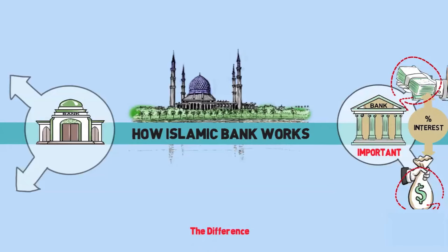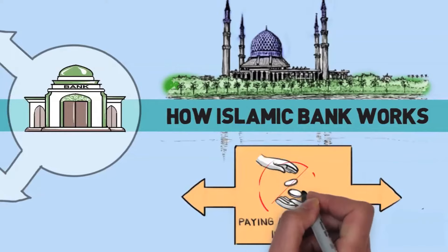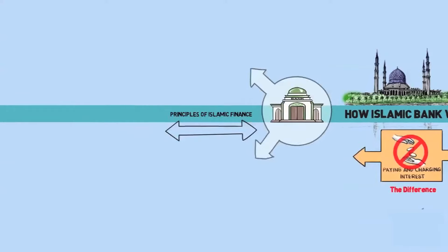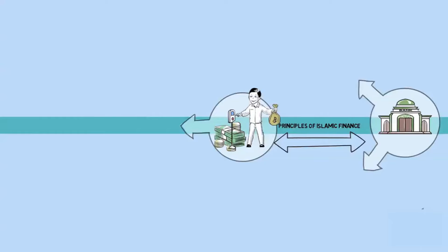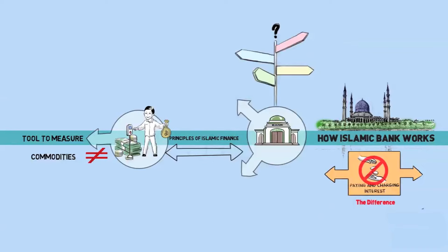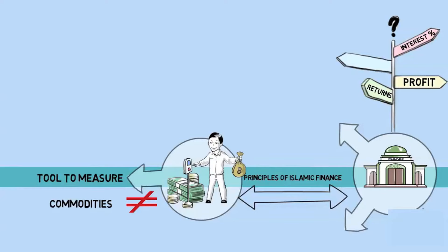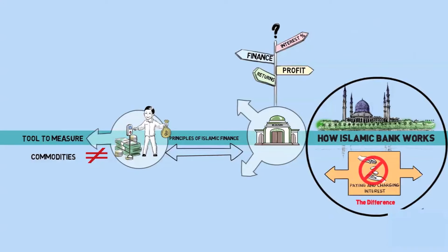The question is: how different is an Islamic bank from an interest-based bank? Islamic law prohibits any excess or premium charged on money lent. Paying interest and charging interest both are not acceptable. Under the principles of Islamic finance, money is viewed as only a medium of exchange and a measure of value. Money is a tool to measure the value of all commodities, and it is not a commodity in itself. So, how will an Islamic bank work without giving or charging interest? How will it make a profit, provide return to its depositors, and provide financing to its customers?